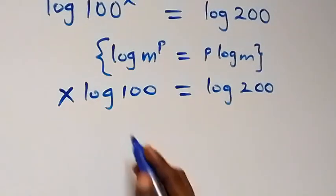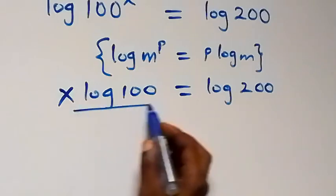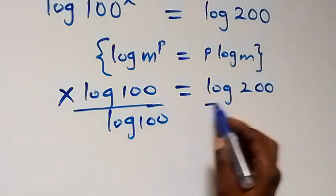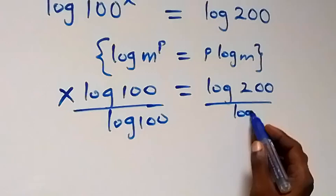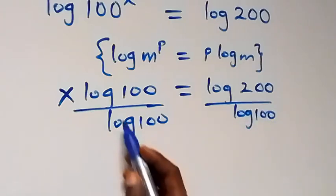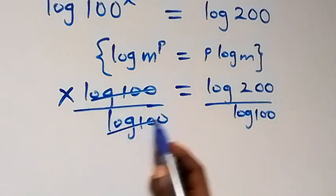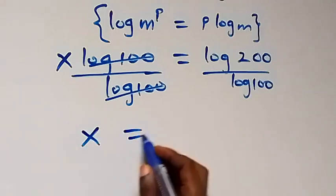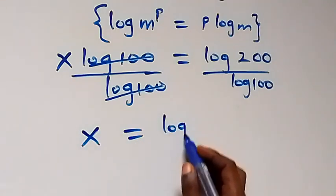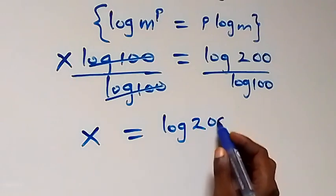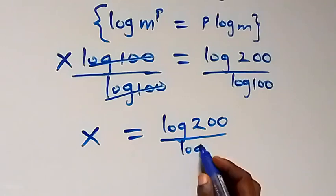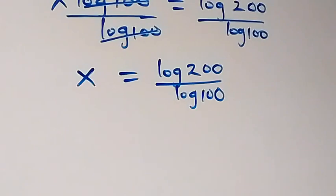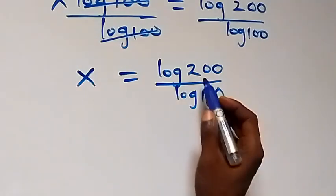From what we have here, we can divide both sides by log(100). Log(100) will cancel each other, and we are left with x, which equals log(200) over log(100).